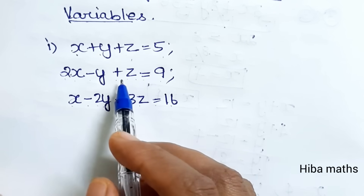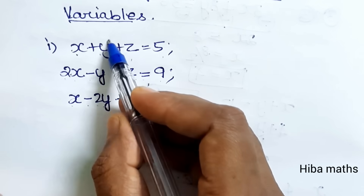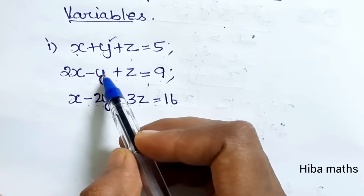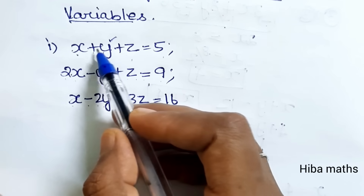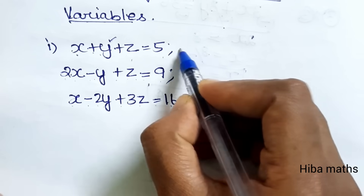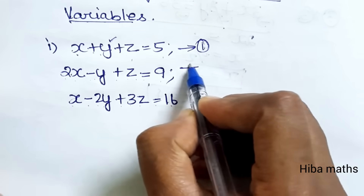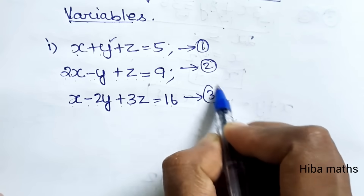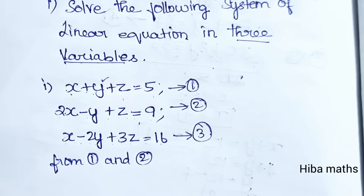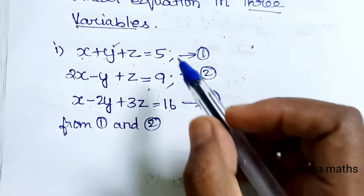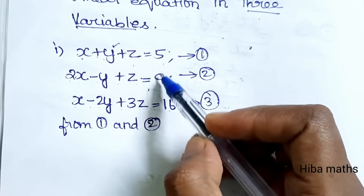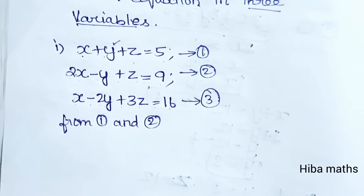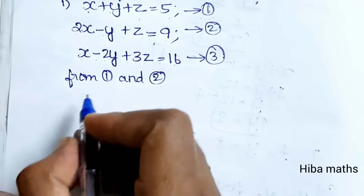We will eliminate the y variable. In the first and second equations, the y terms are plus y and minus y, so they directly cancel. So from equations 1 and 2, we add them together.